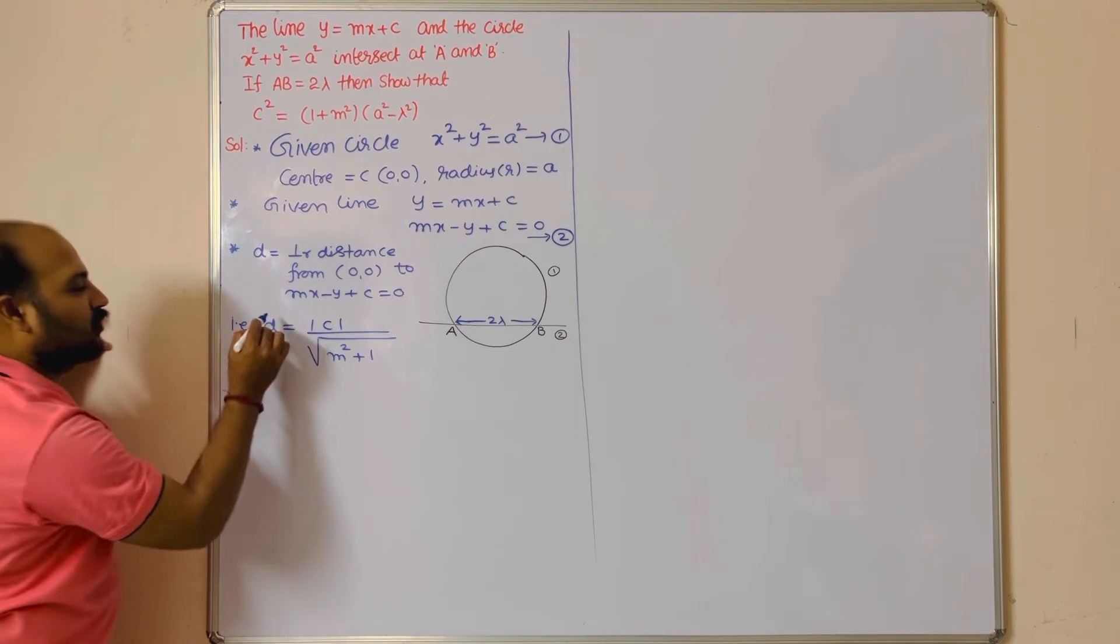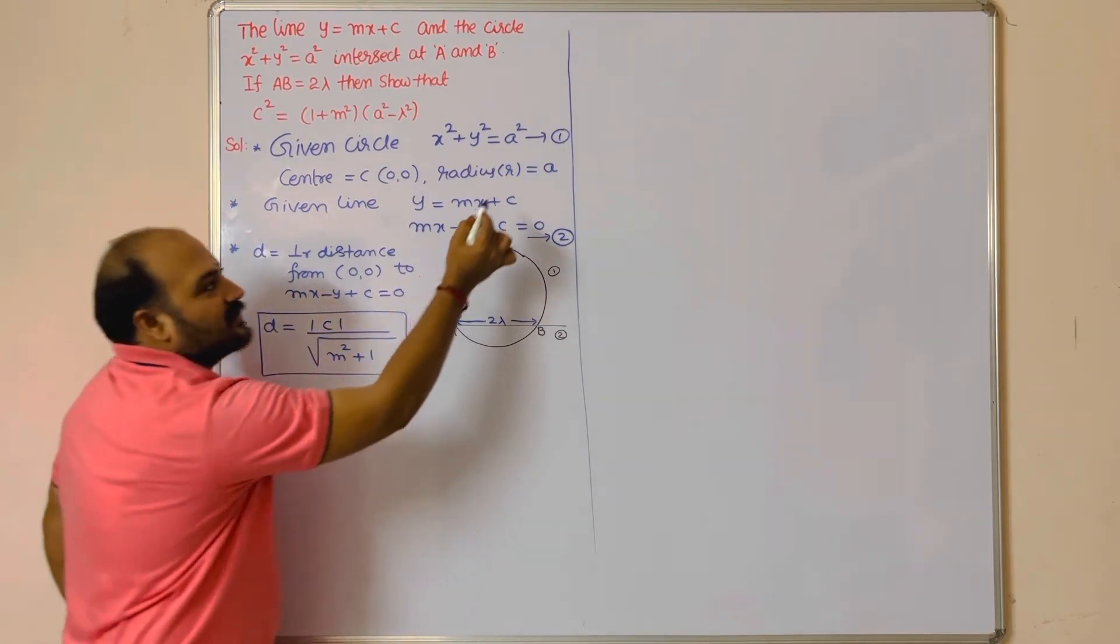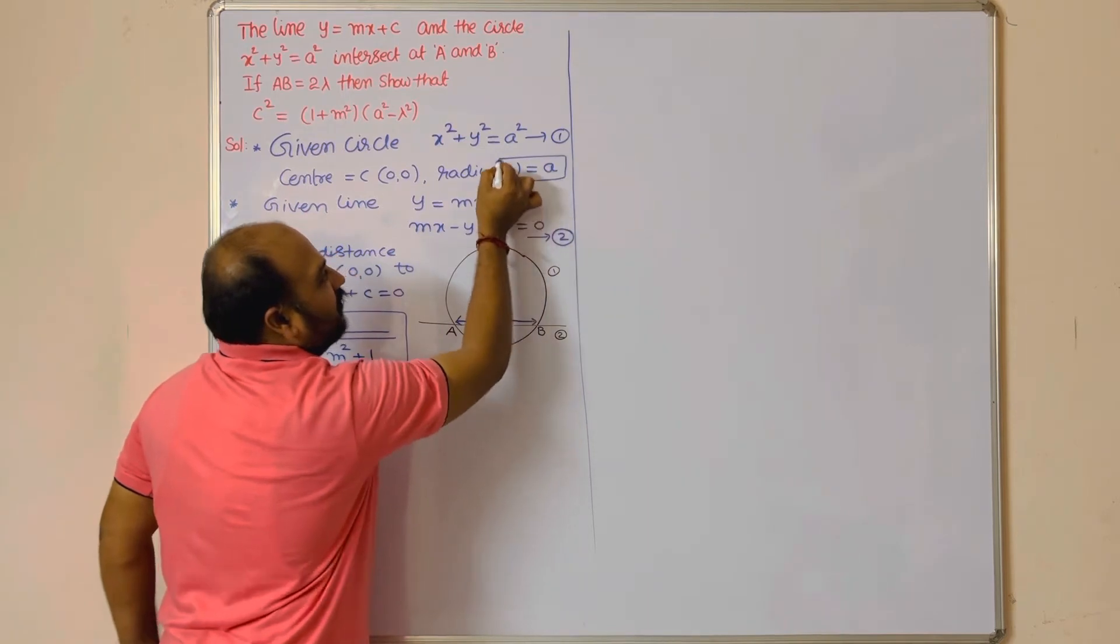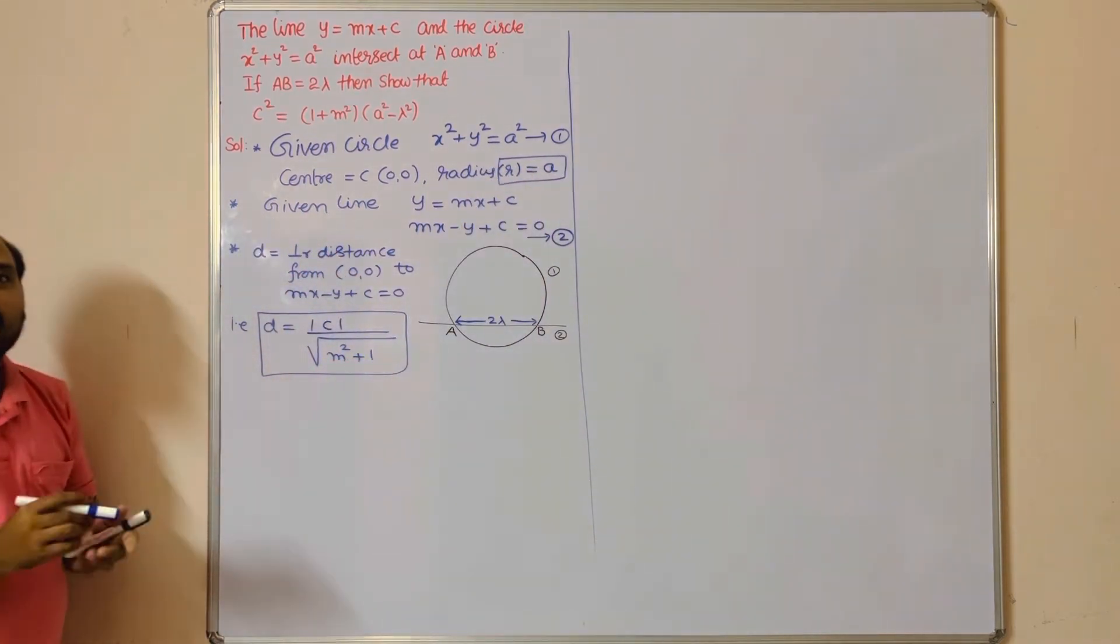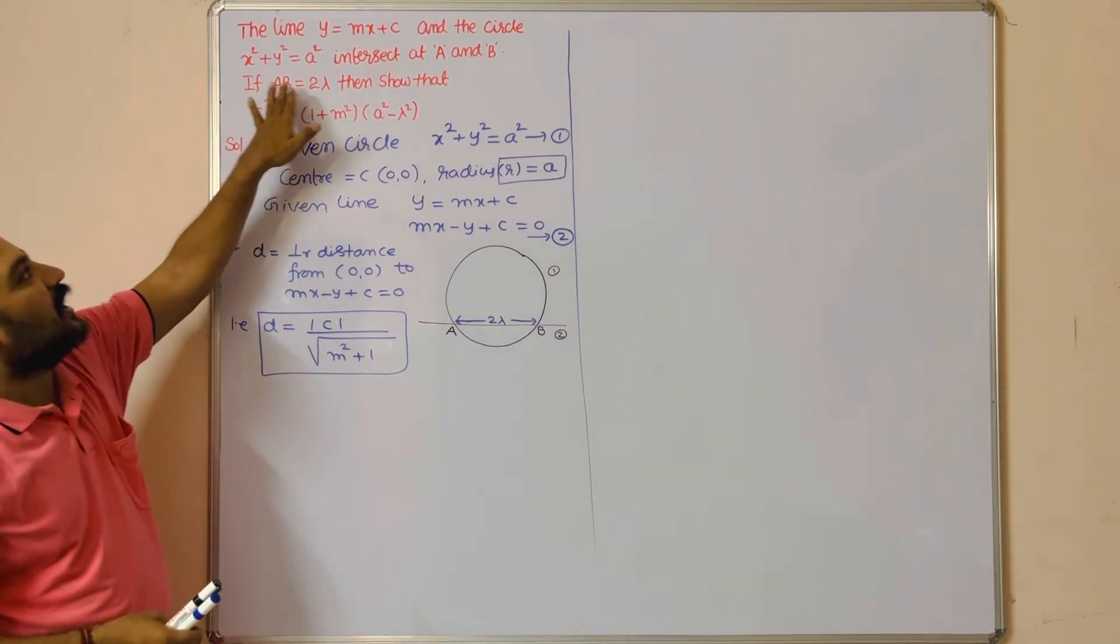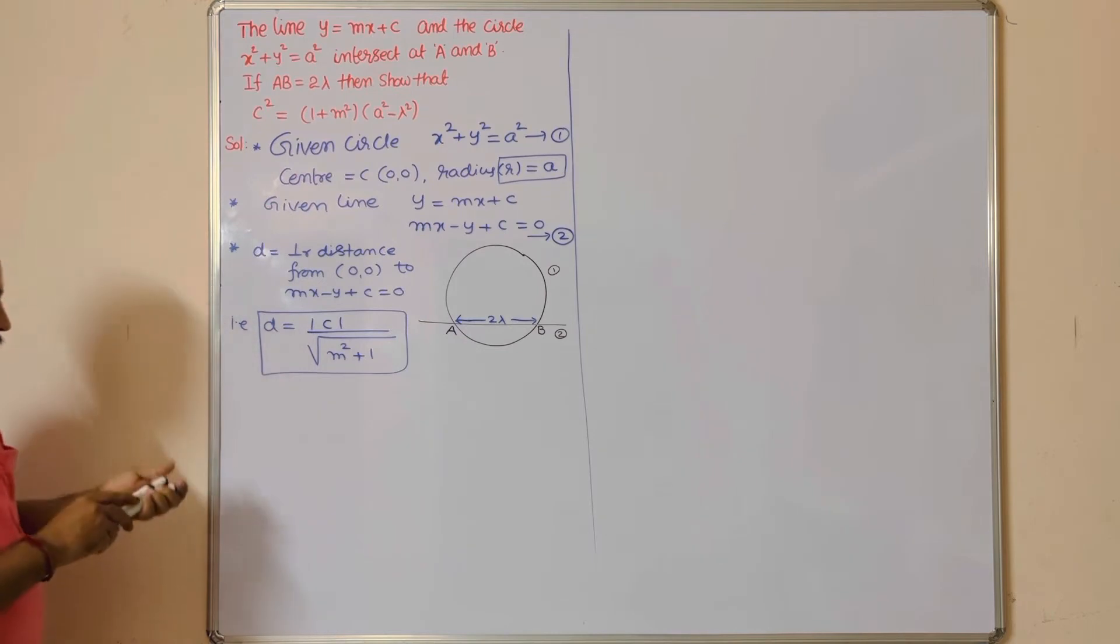So d value is |c|/√(m² + 1). We got the d value. Radius we already know from the given circle. Next condition provided: given AB = 2λ. They are asking to prove this result.